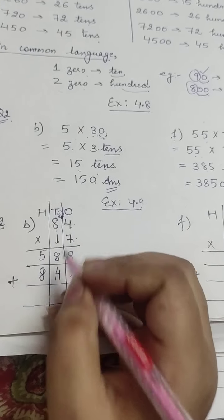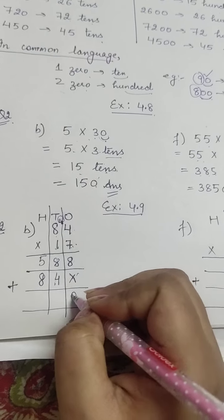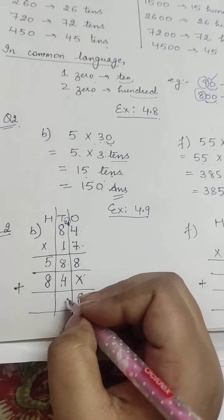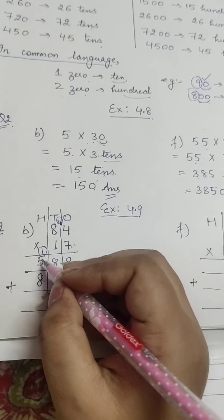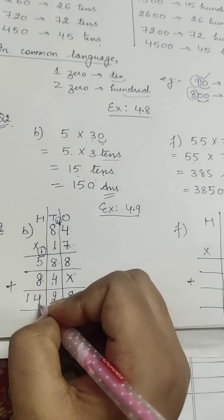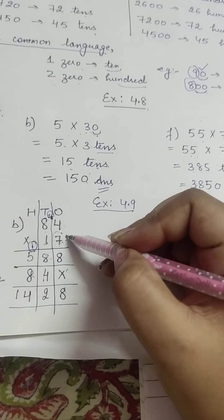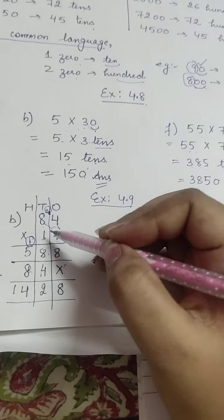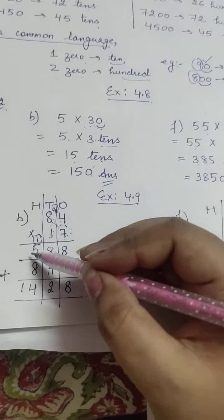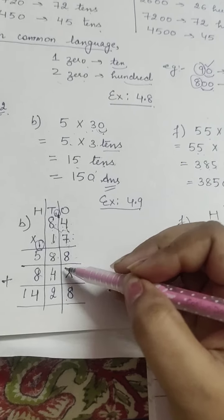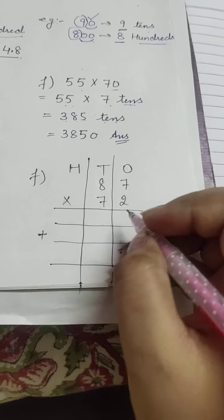After completing multiplication with both digits of the multiplier, you now add the two rows. Nothing is added to the first column, so write 8. 8 plus 4 = 12, so write 2 and carry 1. Then 8 plus 5 plus 1 = 14. Is it clear? First multiply the ones digit with all digits of the multiplicand, put a multiplication row, then multiply the tens digit, and finally add both rows.